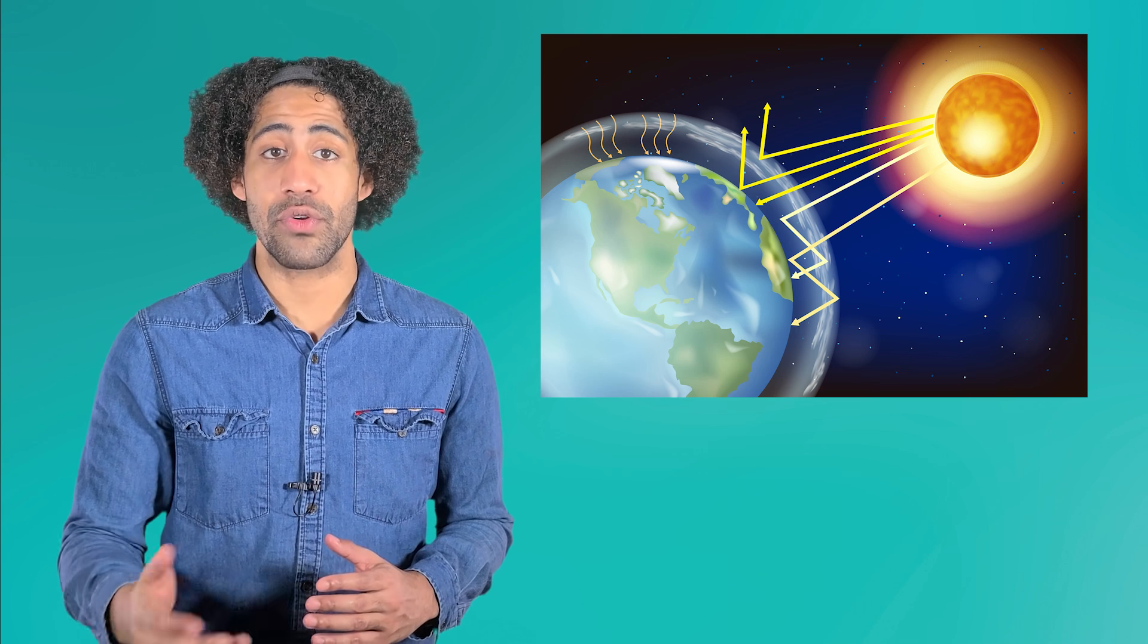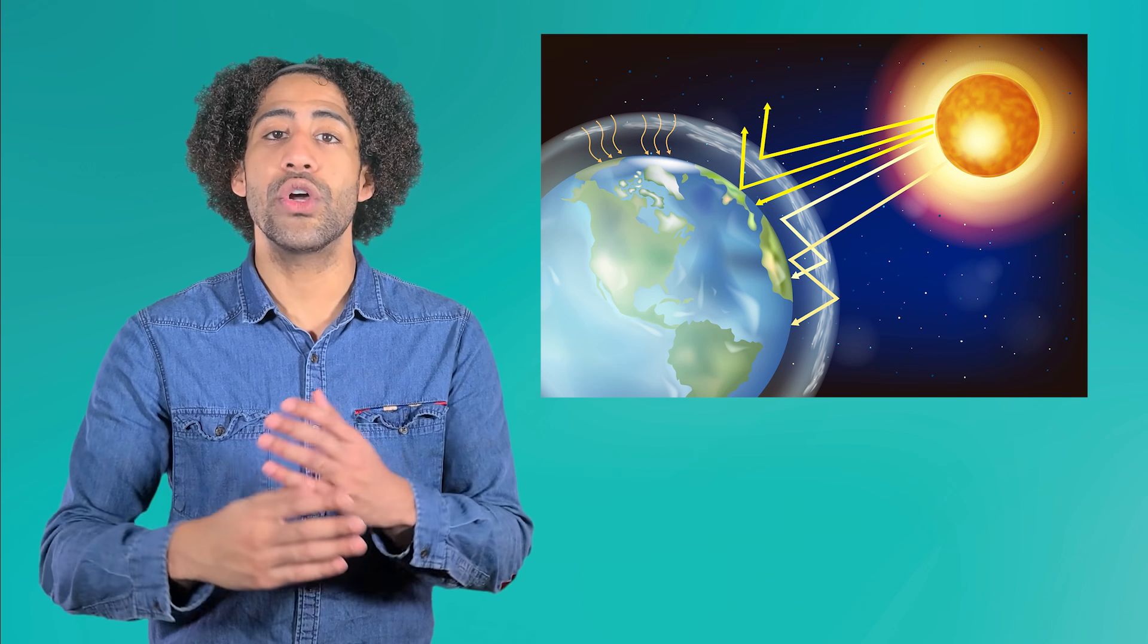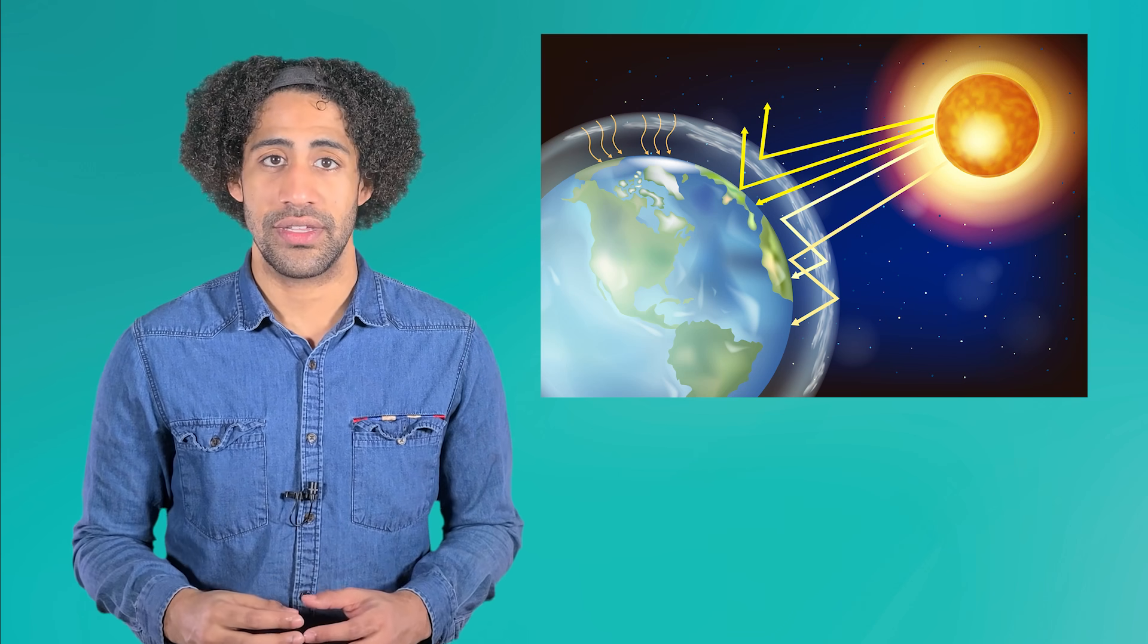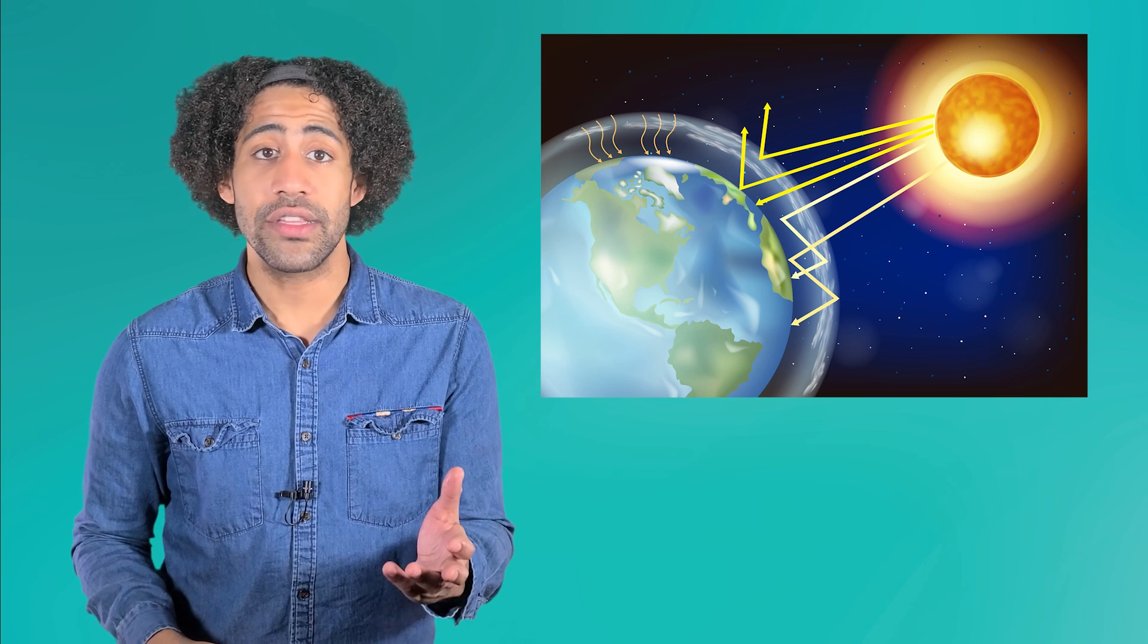Like many processes on Earth, the processes that transfer heat through our atmosphere are interconnected. Radiation transfers heat to and from the ground. Conduction then carries this heat into the air, where it is then moved all over the planet by convection. And together, those three methods of heat transfer regulate the temperature of our entire planet.